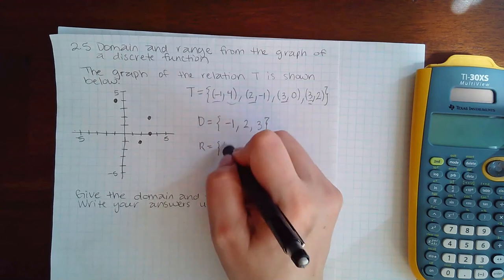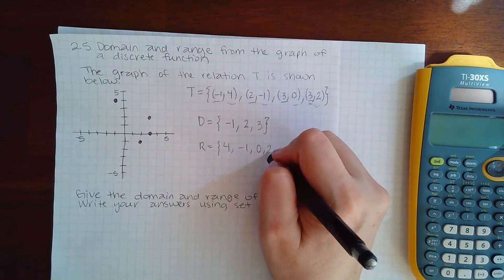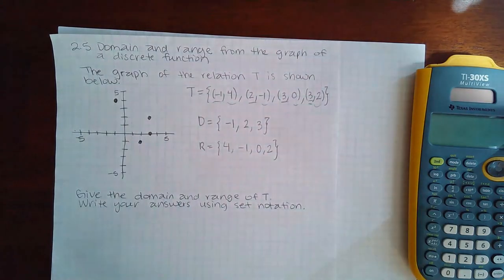be 4, -1, 0, and 2. They were all different here, so I had to use all of them